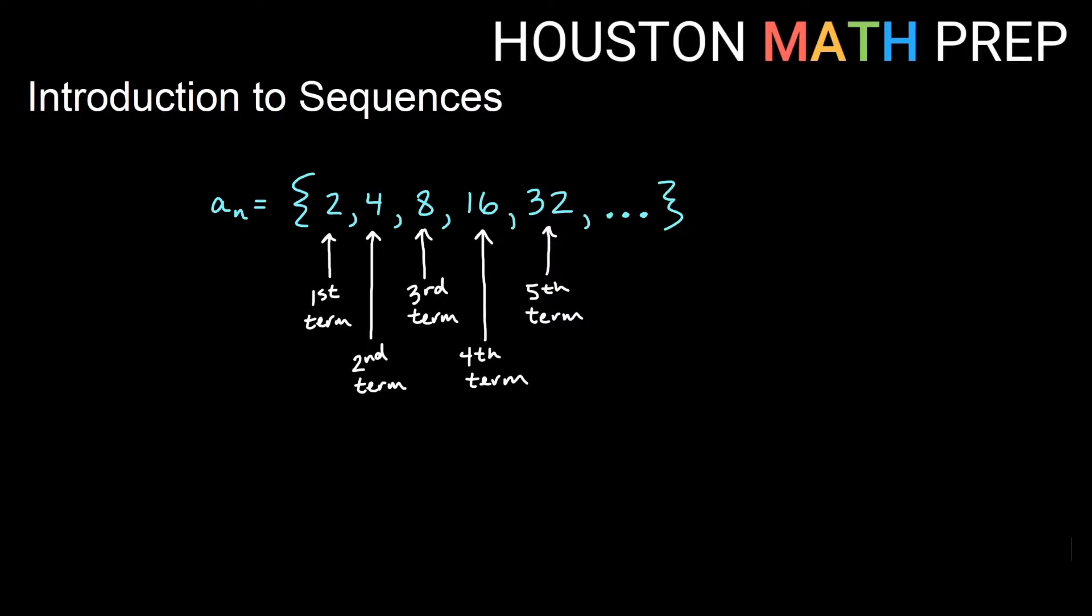Each of these terms, it's an ordered list. So we have a first term, a second term. They come in a specific order. It's different than a set. If you just throw all the same stuff in there, it doesn't matter the order you put it in. But for sequences, it's an ordered list. So there's a definite first, second, third, fourth term.